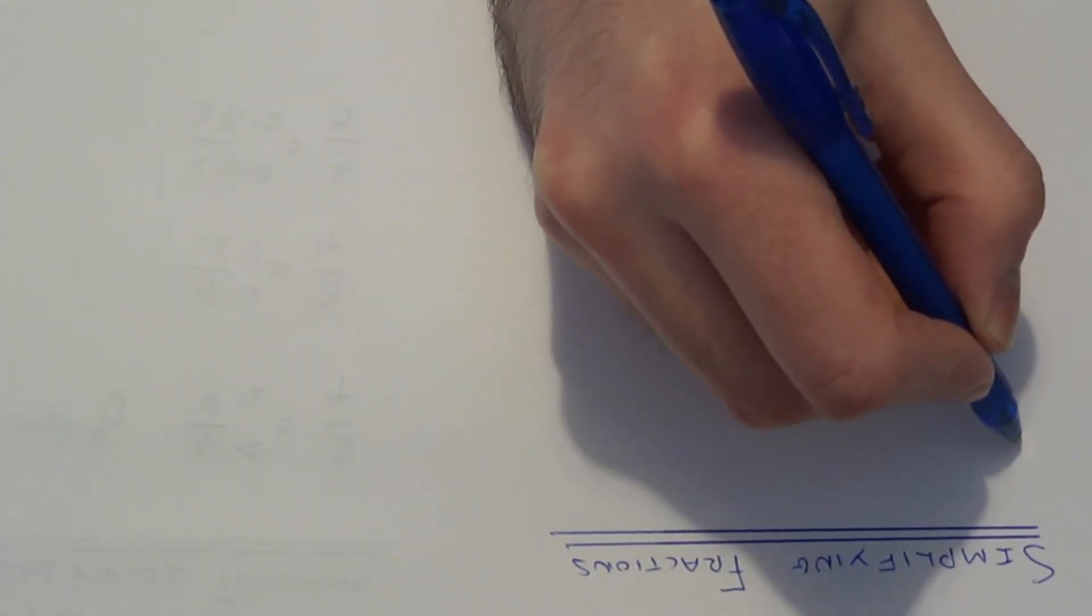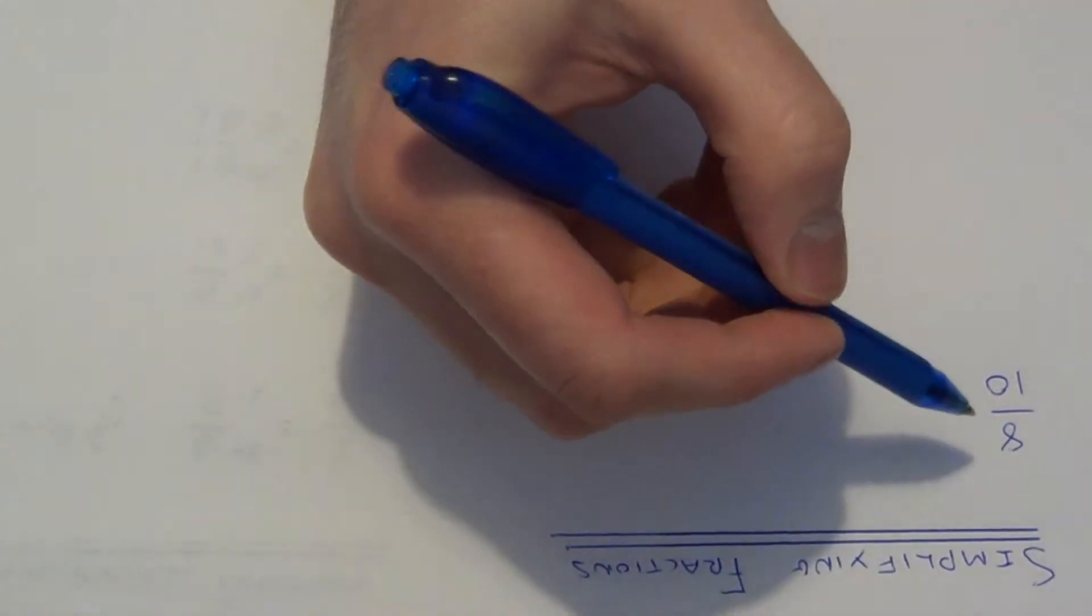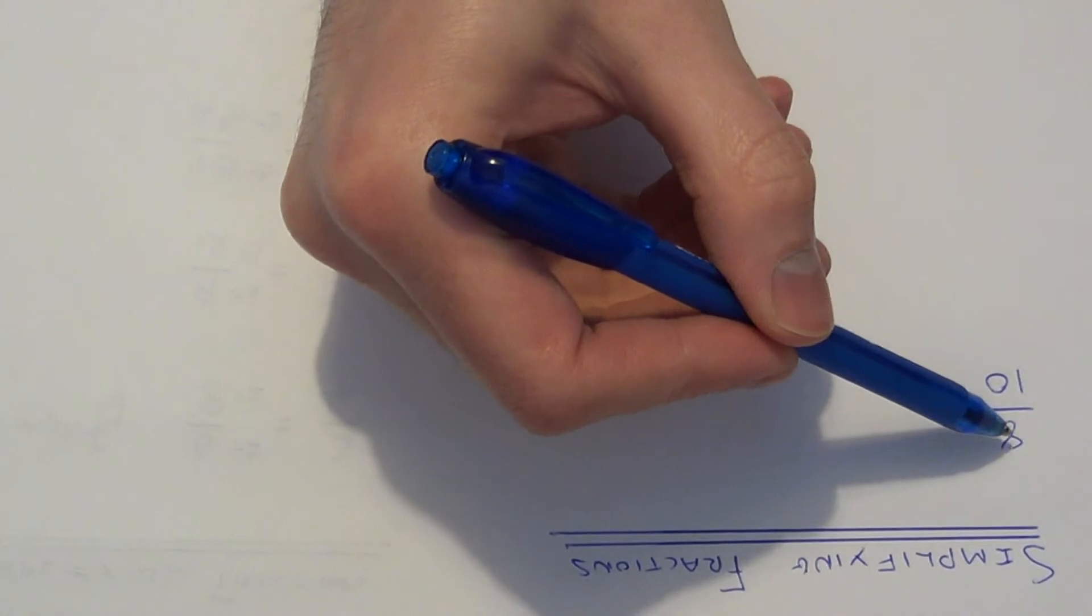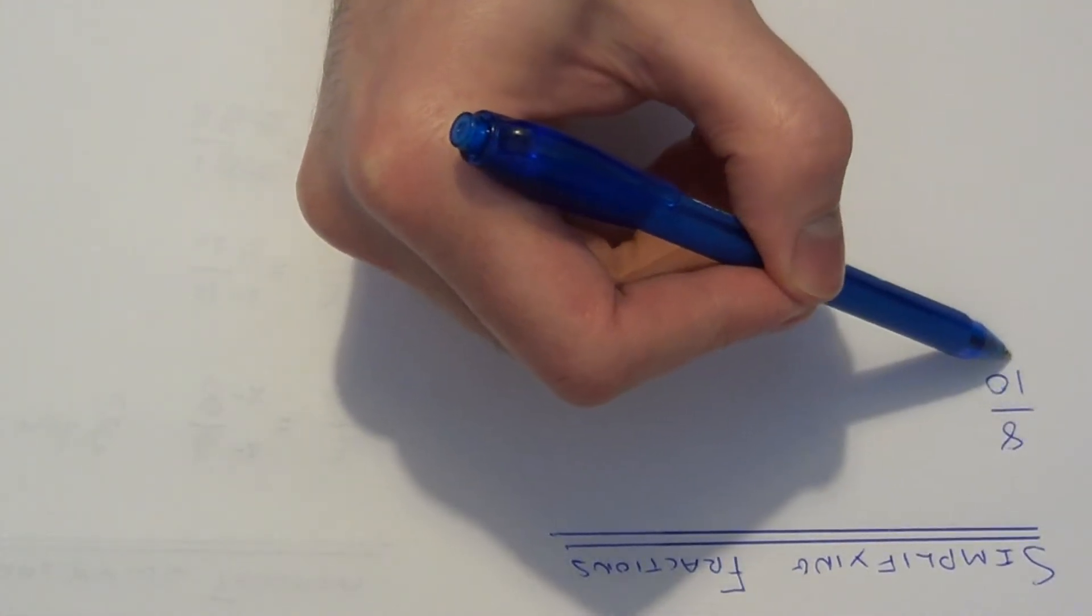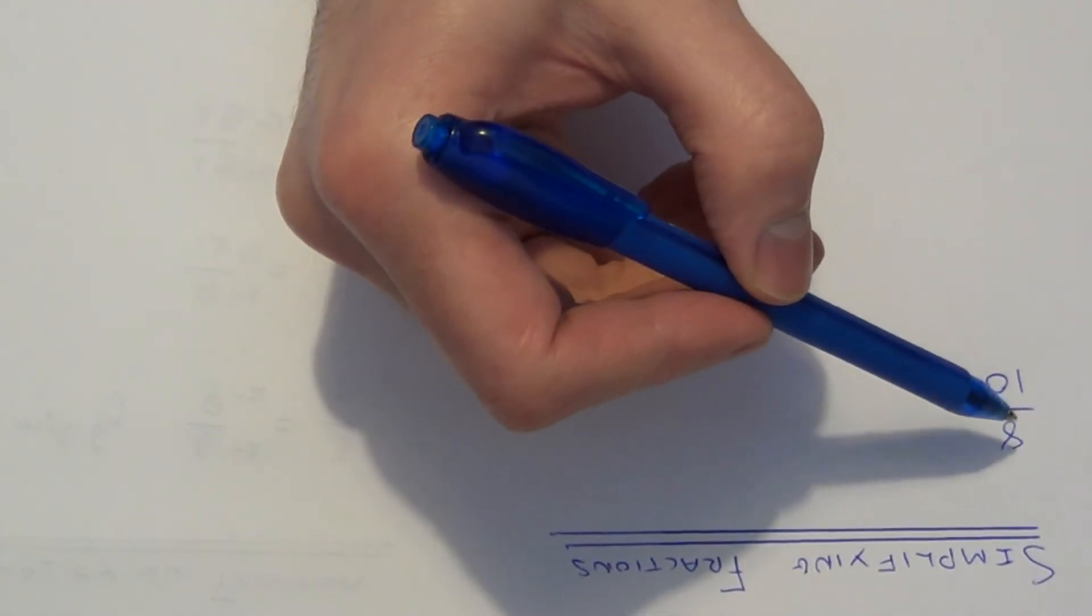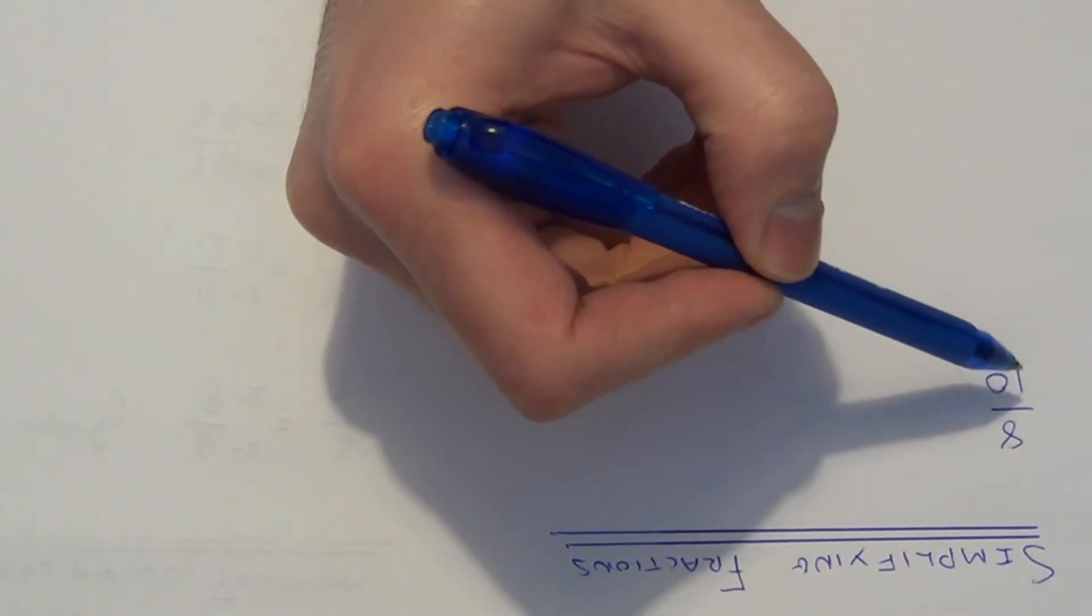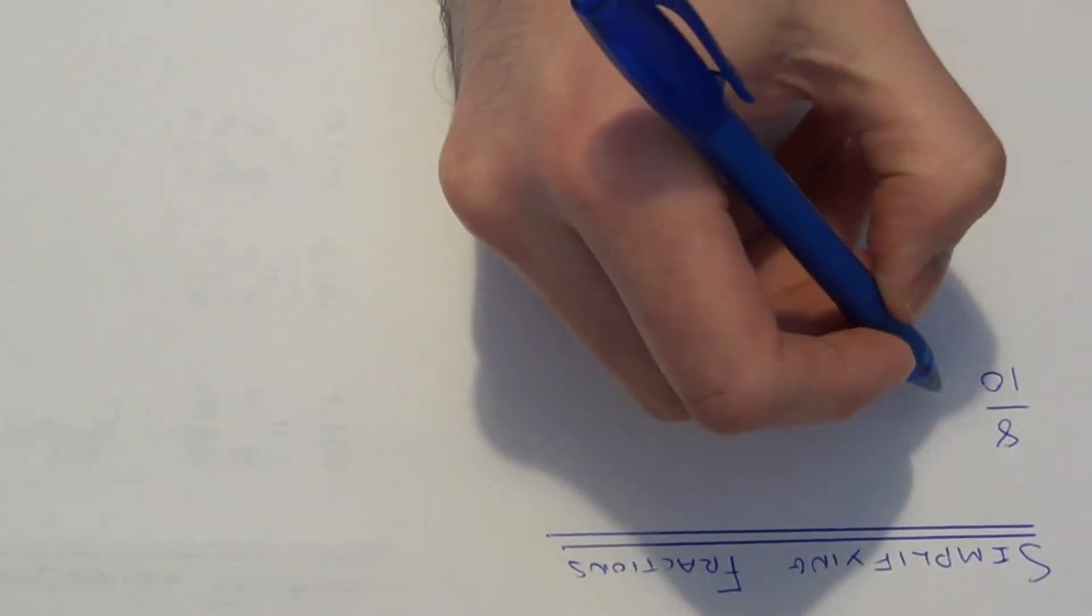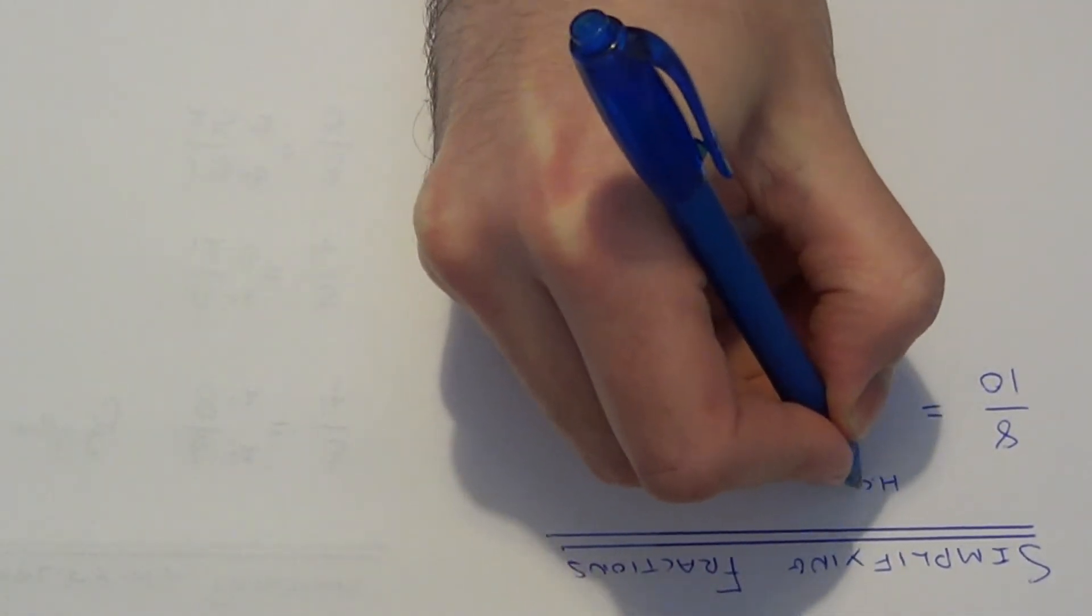So let's simplify 8 tenths. All you need to do is look for the highest common factor of the numerator and the denominator. The highest common factor is the biggest number that divides into 8 and divides into 10. In this case, the highest common factor is 2.